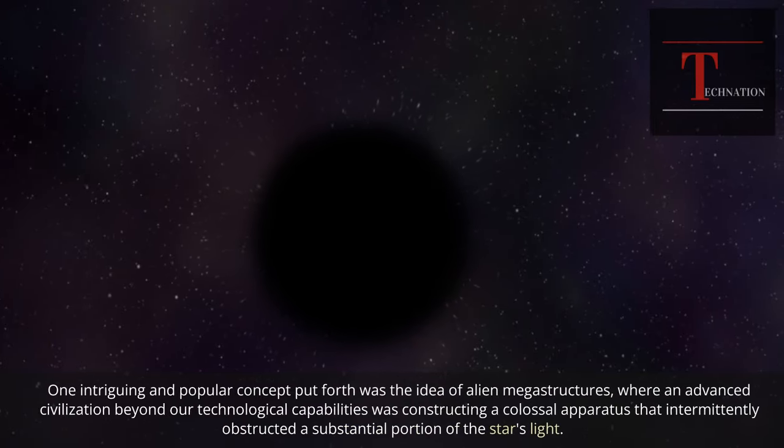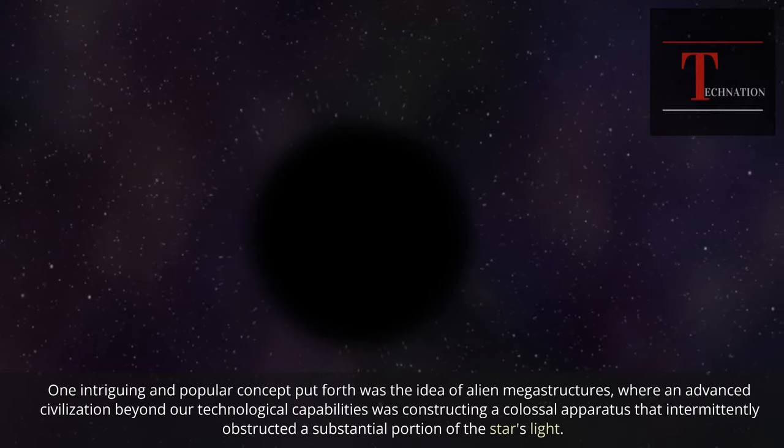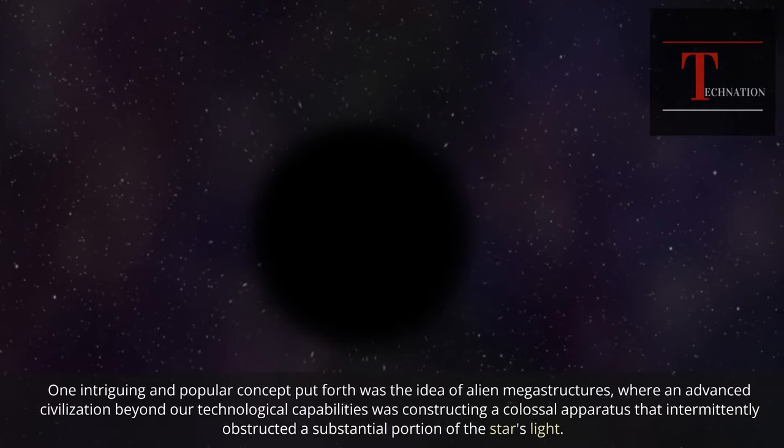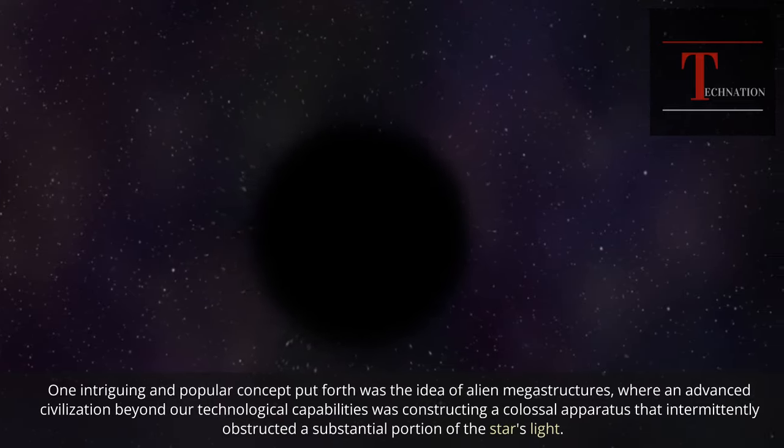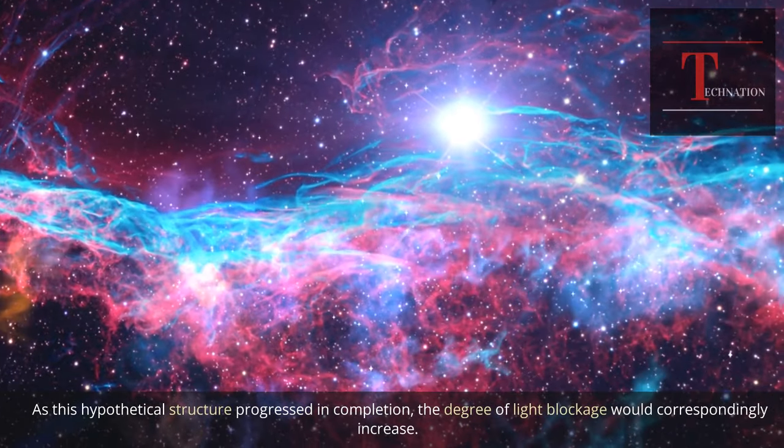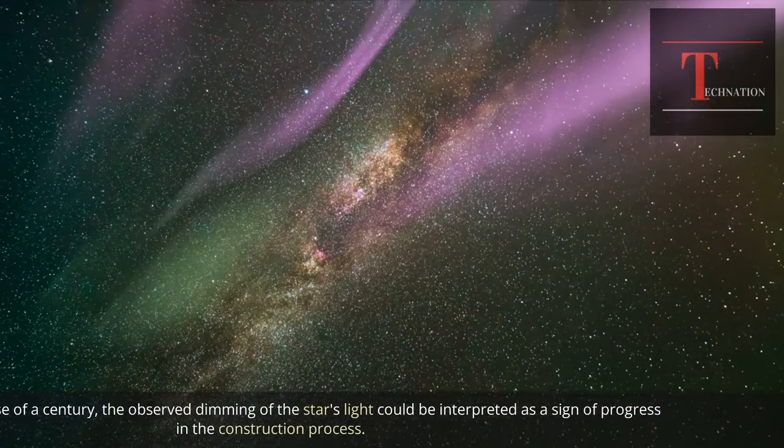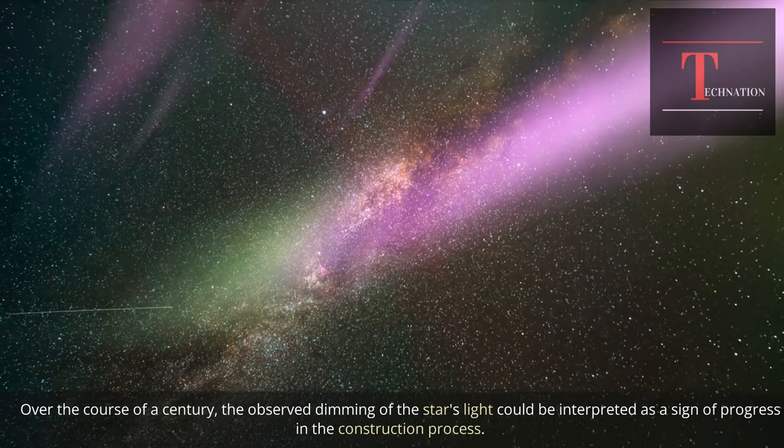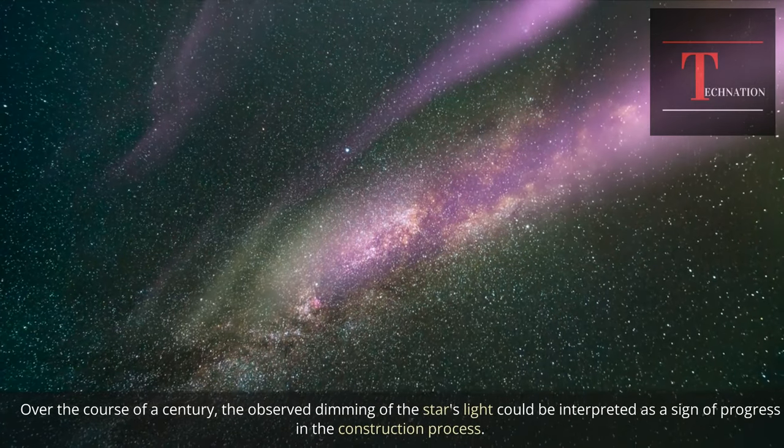One intriguing and popular concept put forth was the idea of alien megastructures, where an advanced civilization beyond our technological capabilities was constructing a colossal apparatus that intermittently obstructed a substantial portion of the star's light. As this hypothetical structure progressed in completion, the degree of light blockage would correspondingly increase. Over the course of a century, the observed dimming of the star's light could be interpreted as a sign of progress in the construction process.